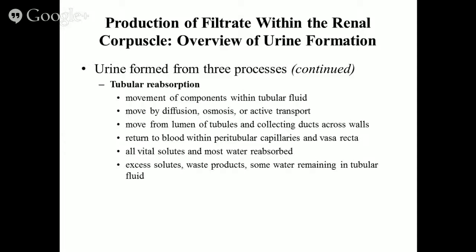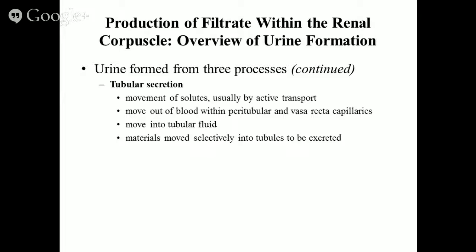At the proximal convoluted tubule, the primary job is reabsorption. Remember: the prefix 're-' means to return — something is going back. So we're not just absorbing this stuff, we're reabsorbing it — putting something back in its place. If I am reabsorbing glucose, water, or amino acids, that means those things were originally mine and now I'm taking them from that flow and putting them back into my body.